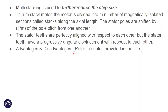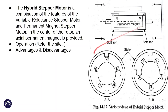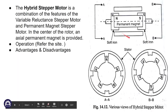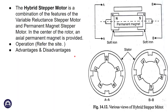The advantages and disadvantages are one of the main points. The hybrid stepper motor combines features of the variable reluctance stepper motor with a permanent magnet. The diagram shows the permanent magnet with North and South poles and a soft iron core.